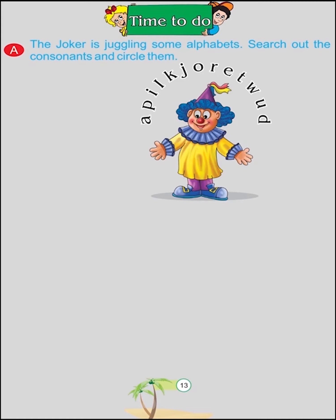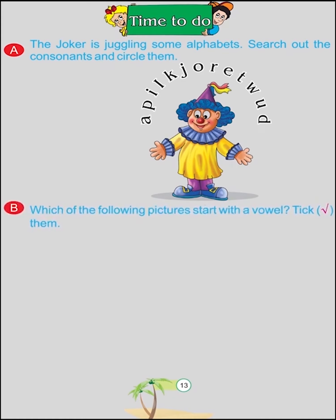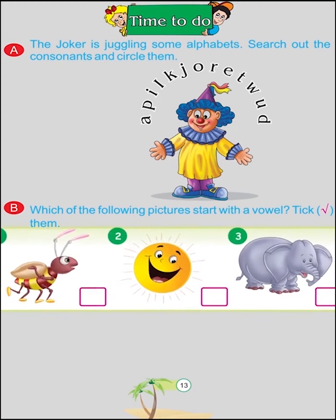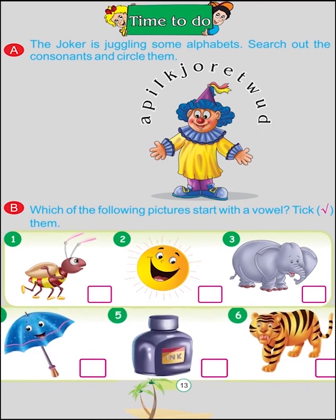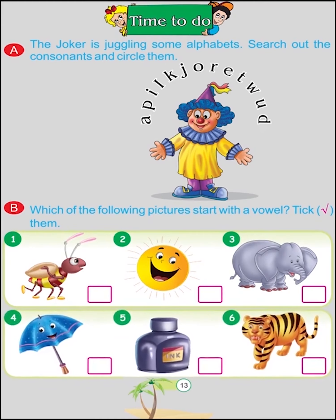Which of the following pictures start with a vowel? Tick them: I for Insect, E for Elephant, I for Ink, U for Umbrella.